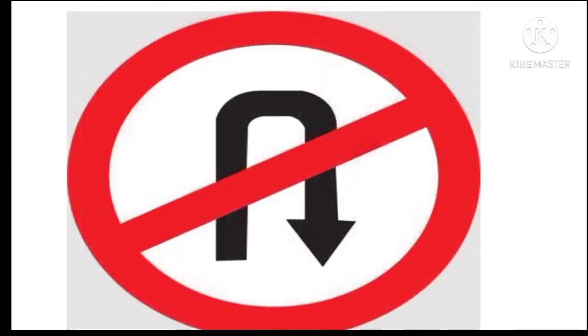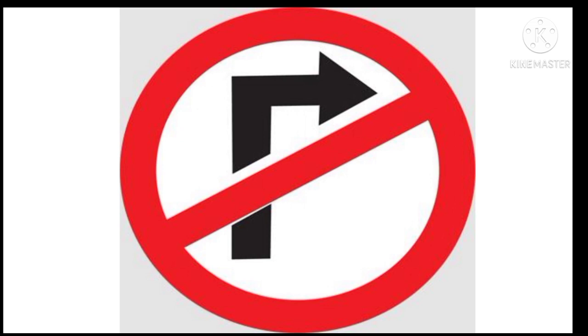This symbol represents overtaking prohibited. Some places where roads are narrow or at turns, overtaking becomes dangerous — for that area we have to avoid overtaking. This symbol represents no U-turn; the driver should not violate this sign to avoid fines and any untoward incident. This symbol represents no left turn — the sign directs the driver not to turn towards the left side in any circumstance. This symbol represents no right turn — the sign directs the driver not to turn towards the right side in any circumstance.